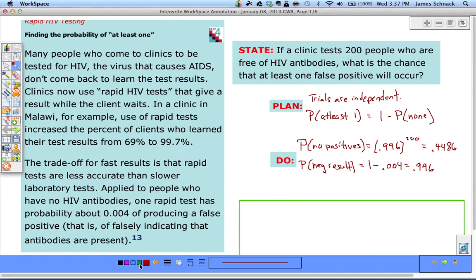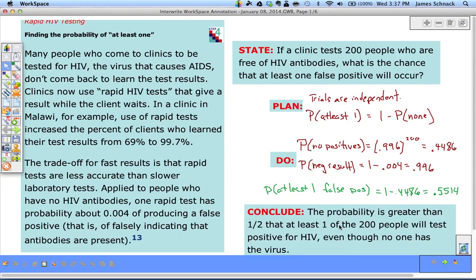Now to find the probability that we have at least one false positive, we do 1 minus 0.4486 and get a probability of 0.5514. The last part of our four-step process is to conclude. We conclude that the probability is greater than one half that at least one of 200 people will test positive given these probabilities, even though nobody has the virus.